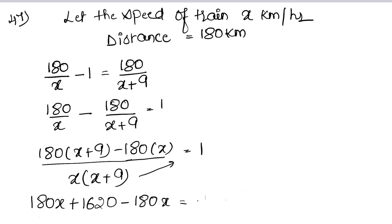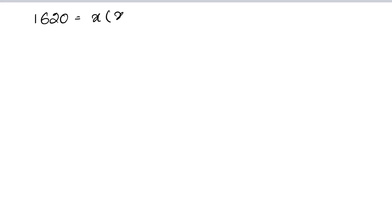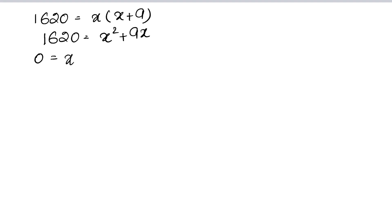So 180(x+9) minus 180x equals x(x+9). After cancellation, 1620 equals x(x+9). Opening brackets: 1620 equals x squared plus 9x. Moving to left hand side gives us minus 1620, so x squared plus 9x minus 1620 equals 0.